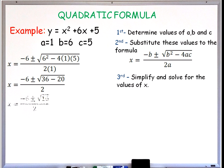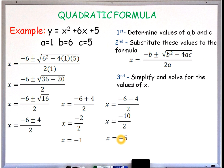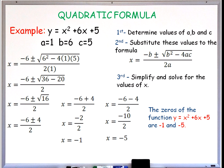36 minus 20 gives us positive 16, and the square root of 16 is positive or negative 4. Using positive 4: negative 6 plus 4 divided by 2 gives us negative 2 divided by 2, which equals negative 1. Using negative 4: negative 6 minus 4 gives us negative 10, divided by 2 gives us negative 5. Thus the zeros of the function y equals x squared plus 6x plus 5 are negative 1 and negative 5.